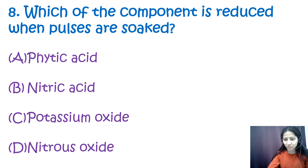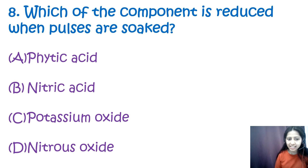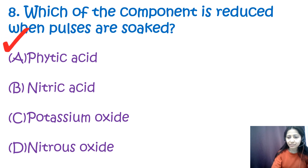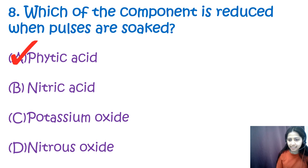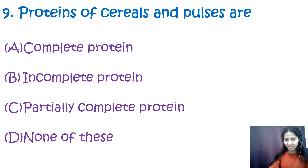Question 8: Which component is reduced when pulses are soaked? Options are phytic acid, nitric acid, potassium oxide, and nitrous oxide. The correct option is A — phytic acid. Soaking pulses helps reduce oligosaccharides of the raffinose family and also reduces phytic acids present in the pulses.